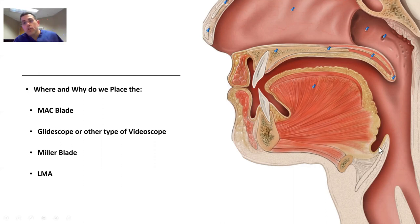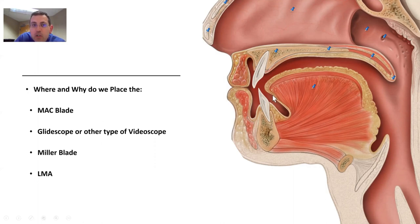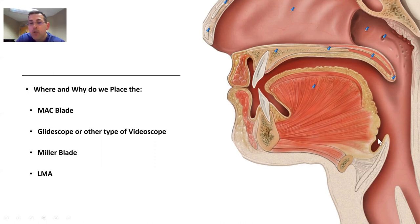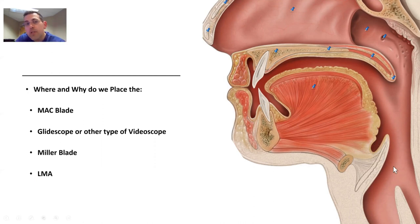With the tip in the vallecula, we lift up at a 45-degree angle toward the ceiling — this further lifts the epiglottis. What beginners very commonly do is rock the MAC blade back. When you rock back, two things happen: you can damage the teeth, and you push the epiglottis down, closing off your view. Beginner intubators don't understand why they're losing their view when rocking back — you're closing the epiglottis. You want to pull up in that direction. The MAC blade is curved, but not curved enough for a direct line of sight to the vocal cord opening.